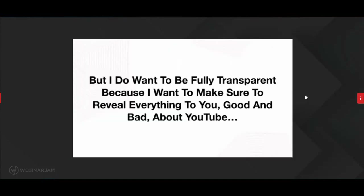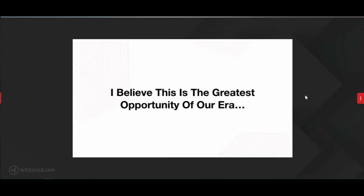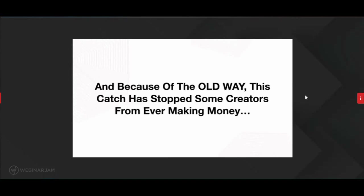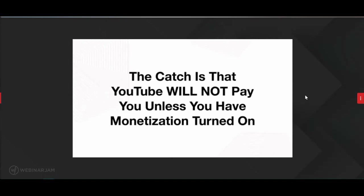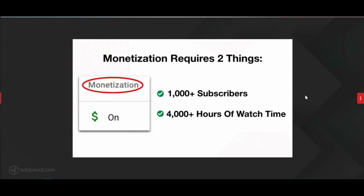I want to be fully transparent about both the good and bad. There is one catch — YouTube will not pay you unless you have monetization turned on. And monetization requires two things only: number one, 1,000 subscribers; and number two, 4,000 plus hours of watch time. Once you have those two things, you can turn on monetization and start getting paid. So how do you get monetized fast? There are three ways.